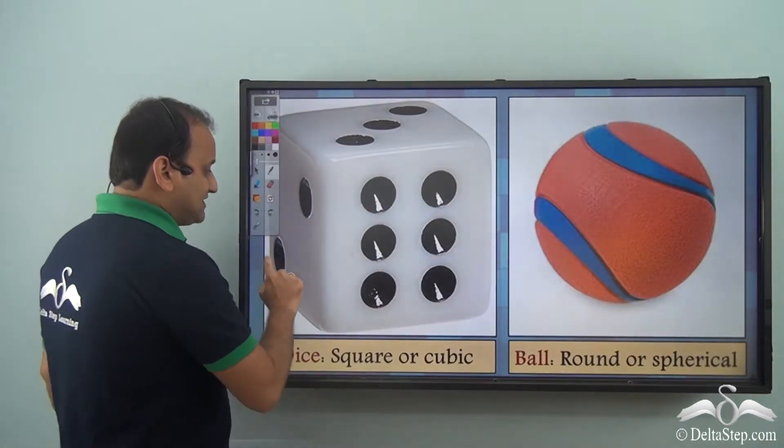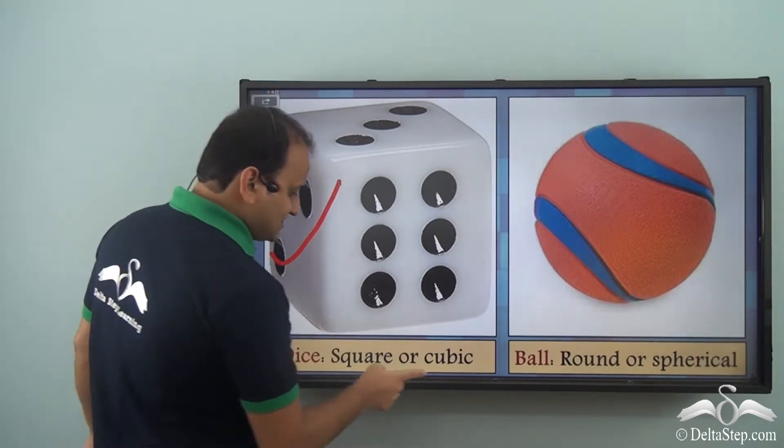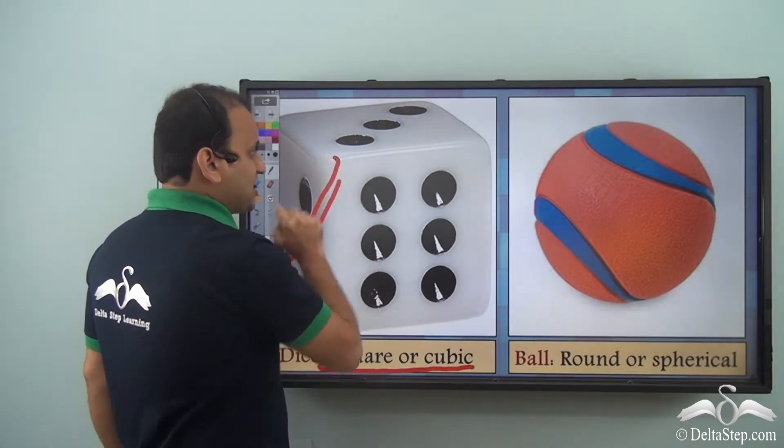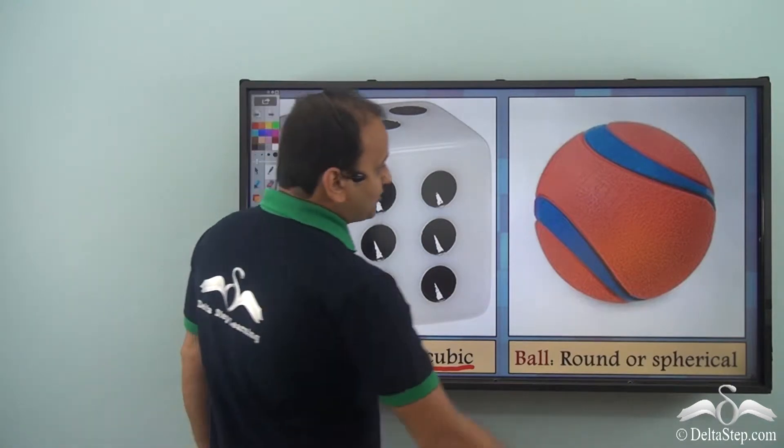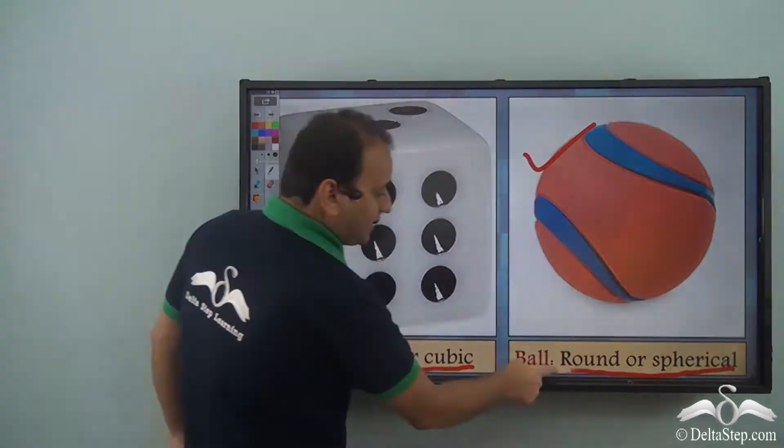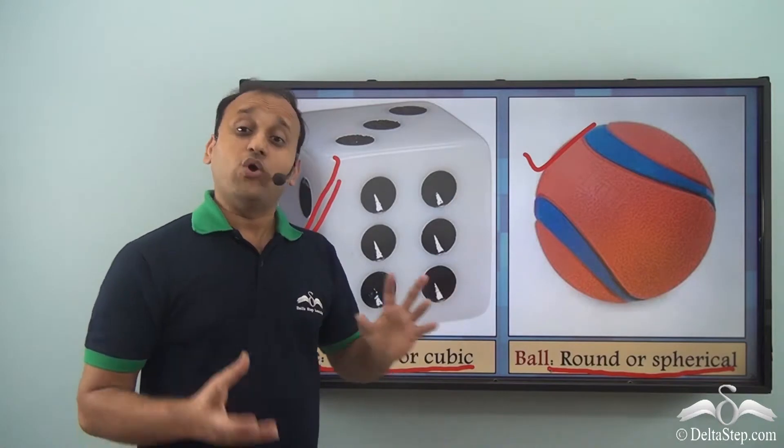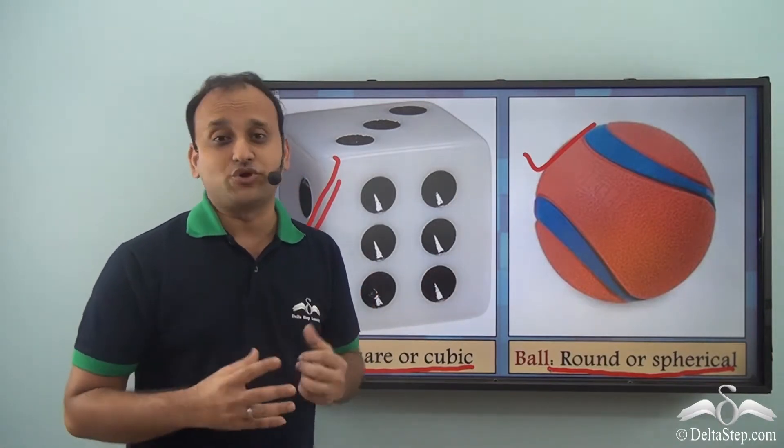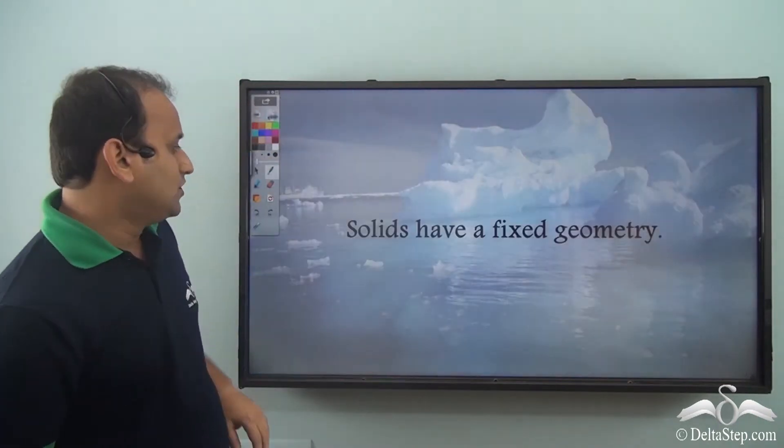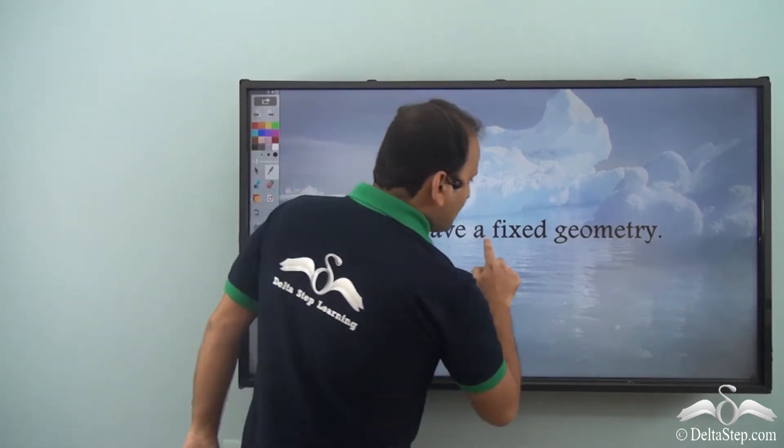You see you have a dice here. What is the shape of this dice? Well, it is like a square or it is cubic. So that is the geometric shape of this particular solid. What about the ball? This is also solid and it is round or spherical. So again, you see this has a geometrical shape which it holds. It has a fixed geometry. In fact, all solids have a fixed geometry.